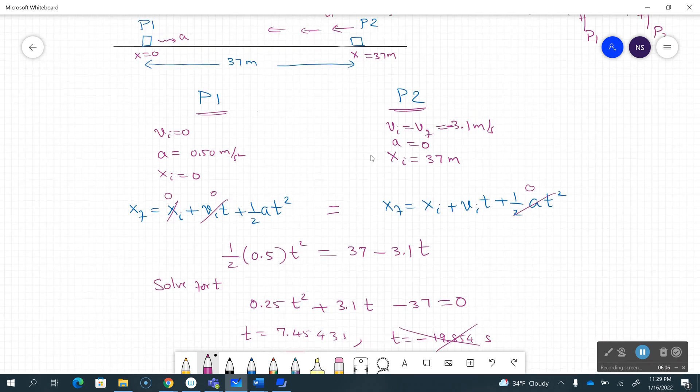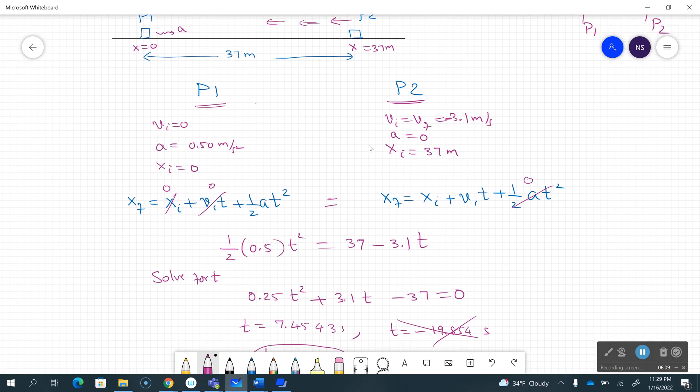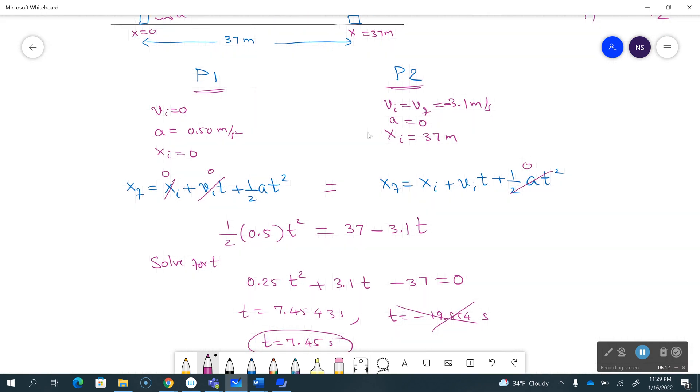And just to make sure it all makes sense, the distance traveled by either one of them should be less than 37. Let's see how far they have gone. If I want xf for player one, I will use one half a*t squared, and that's 0.5 times 7.45 squared, and that comes out to be 13.87 meters or say 13.9 meters.